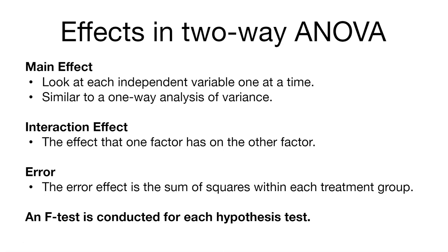With a one-way analysis of variance, we only conducted one F-test because we only had one null hypothesis to test. But now in the two-way ANOVA, we have three hypothesis tests, so we're going to conduct one F-test for each — giving us three F-tests total for the two-way analysis of variance.